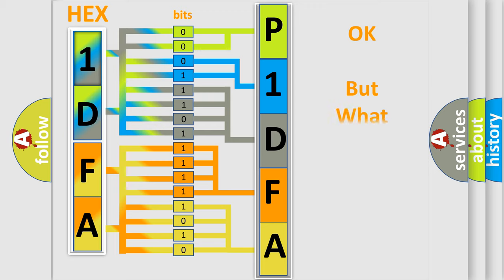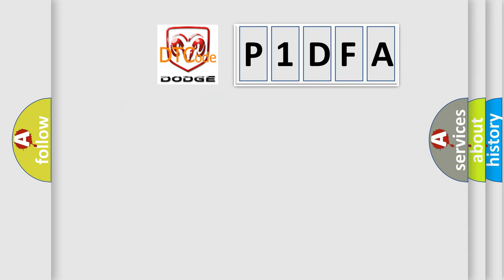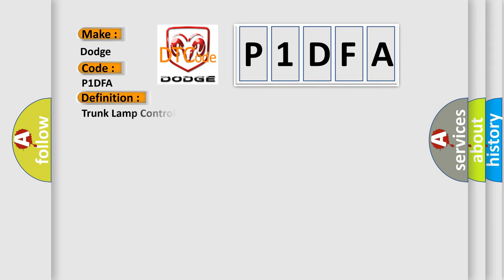The number itself does not make sense to us if we cannot assign information about what it actually expresses. So, what does the diagnostic trouble code P1DFA interpret specifically for Dodge car manufacturers? The basic definition is: trunk lamp control circuit short to battery or open.